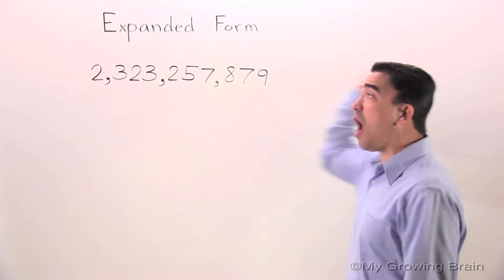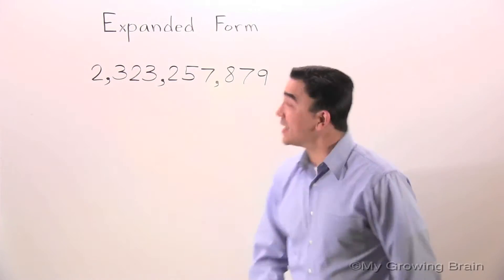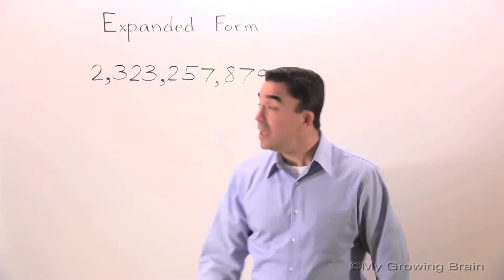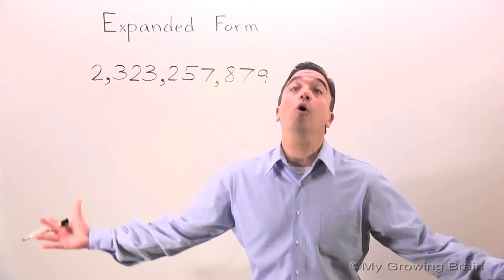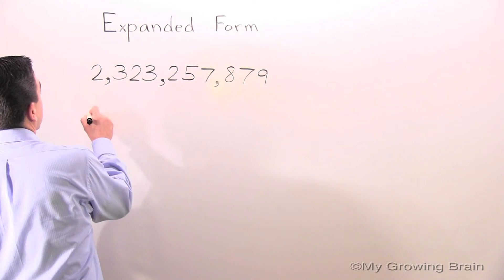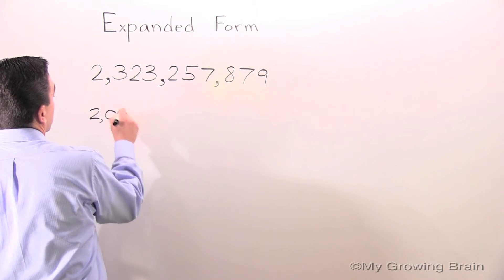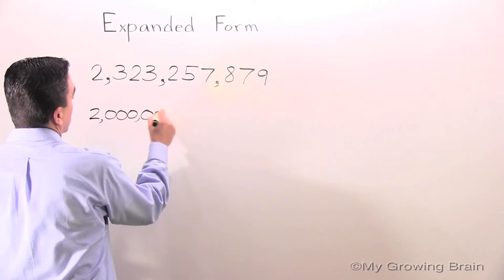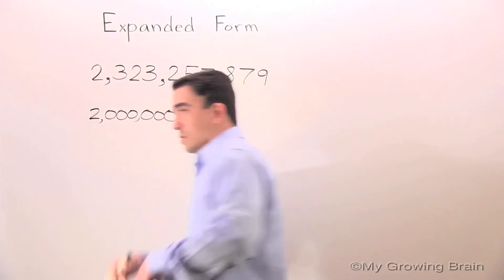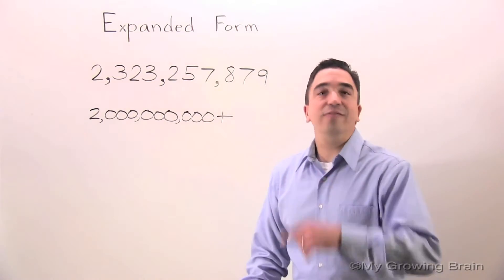We're gonna start all the way to the far left. In the billions place, the digit is 2. It has a value of 2 billion. Let's write it! Still more to do.